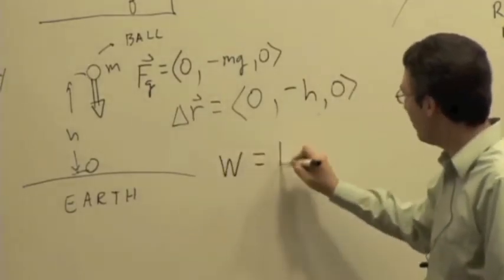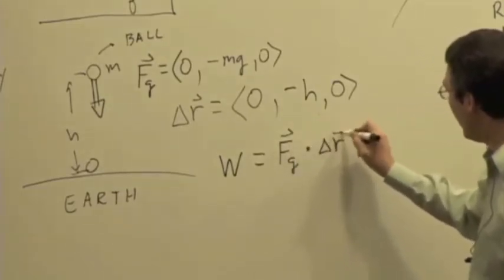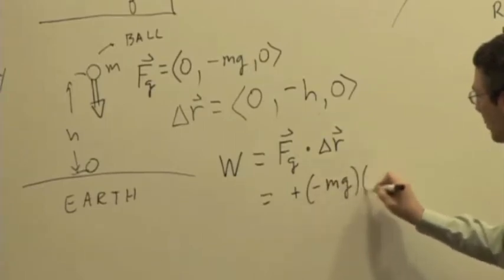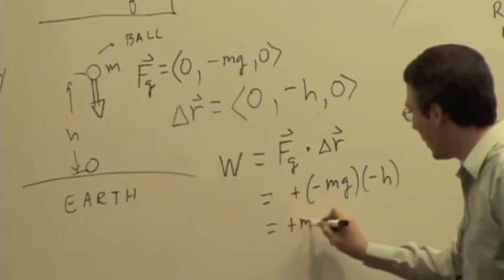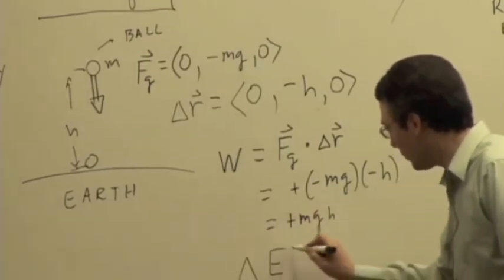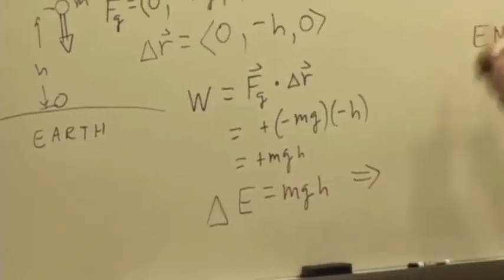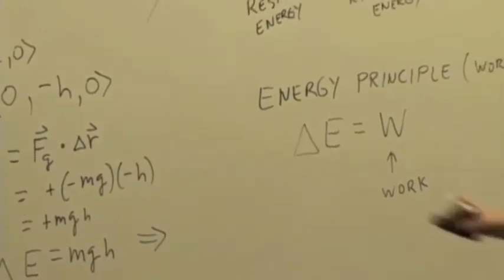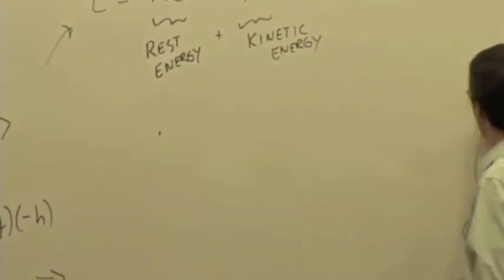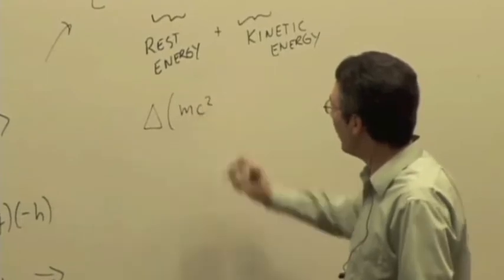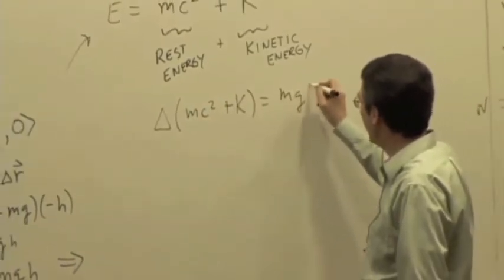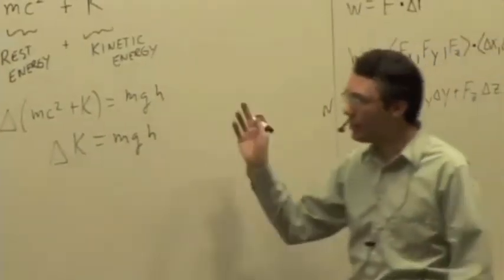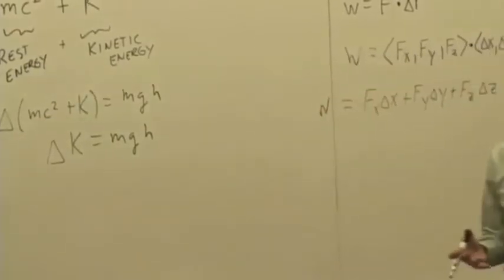We can figure out the work. The work done by the Earth on the ball, F dot delta R, is zero times zero plus negative mg times negative H plus zero. This gives us positive MGH. So the change in the energy of the system is positive MGH. Does the mass change? Is the mass of the ball going to change as it's falling? No. So it's just going to be a change in the kinetic energy.